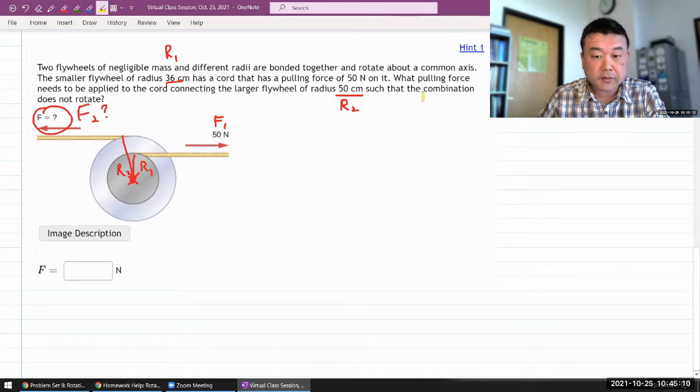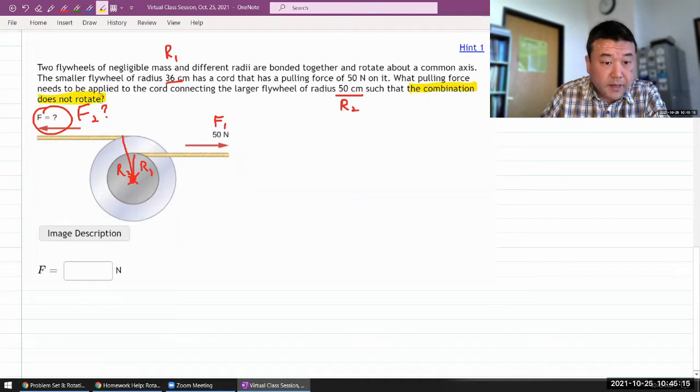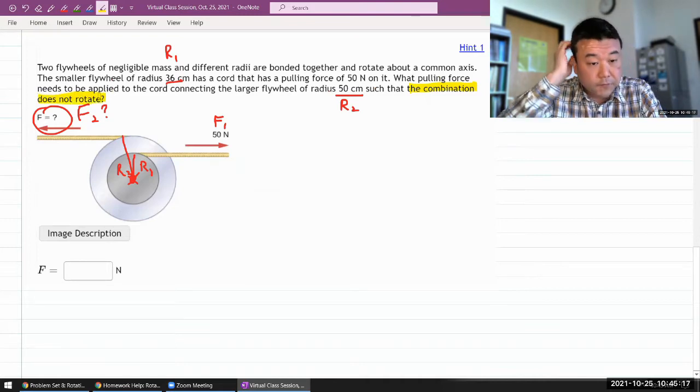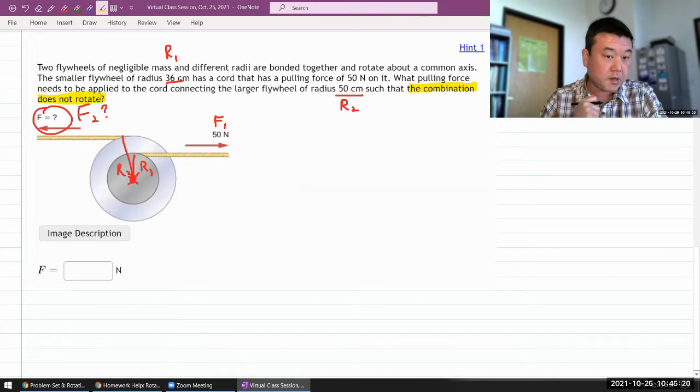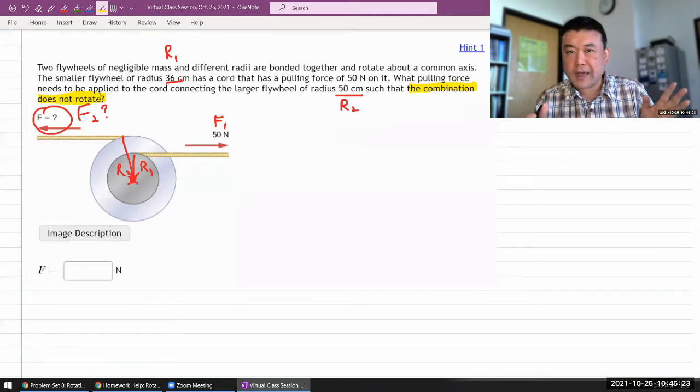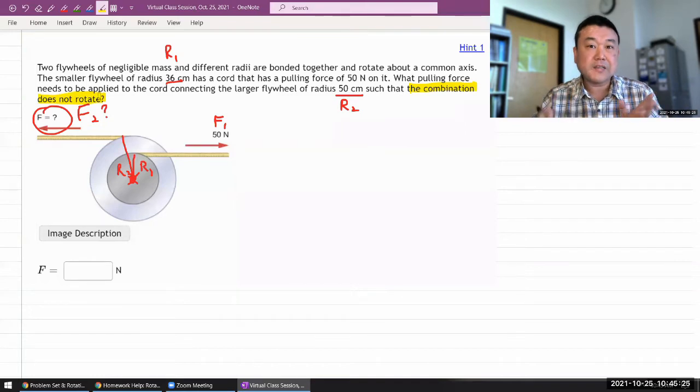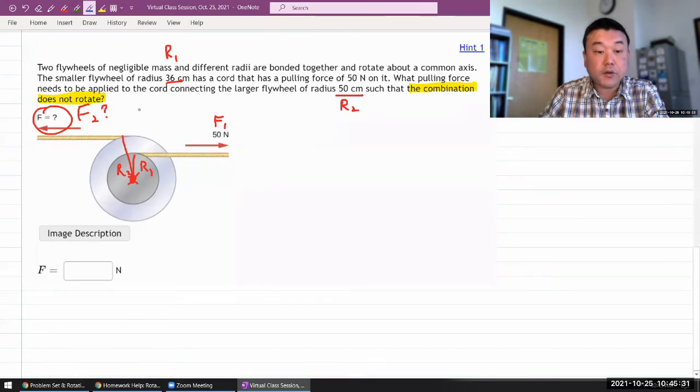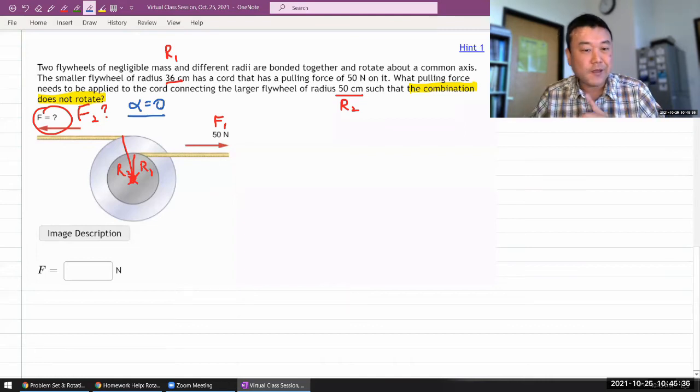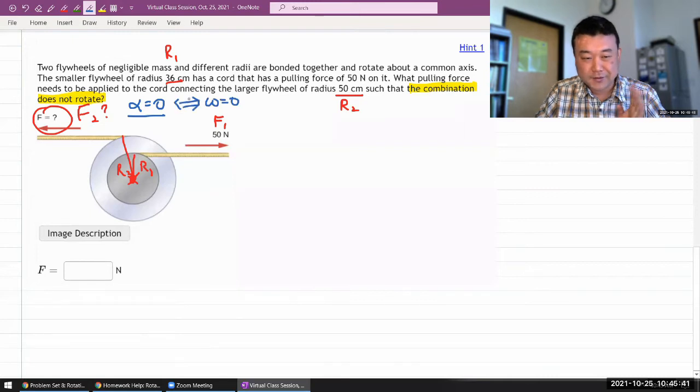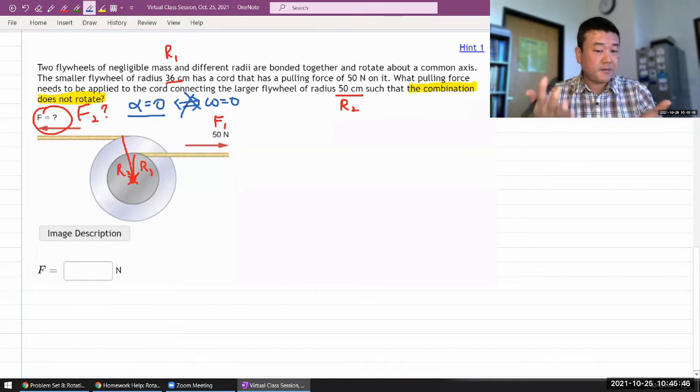And the statement that the combination does not rotate gives us enough information to set this condition. So when we say something doesn't rotate, that seems to mean that angular acceleration is zero. And I do want to distinguish that from the angular velocity being equal to zero. The two are not necessarily the same thing. You've seen that when we are dealing with translational kinematics, and it's the same thing here.